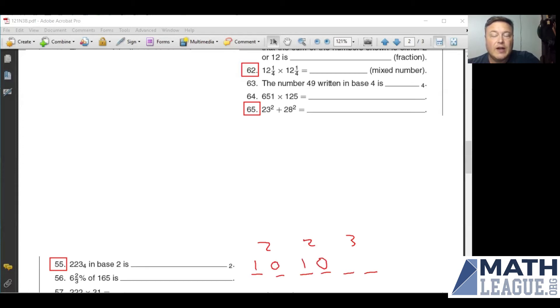So I've got another one zero here. If I want to turn the number three into base two, it becomes a one one. So there's our answer, one zero, one zero, one one.